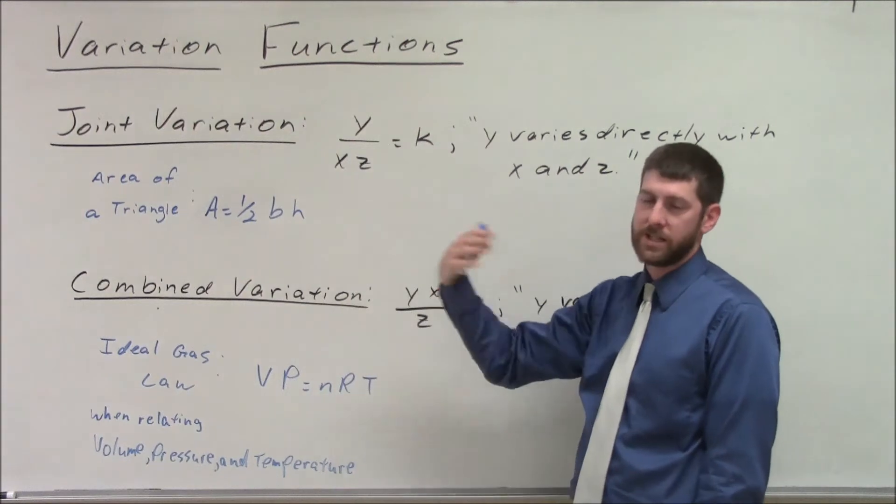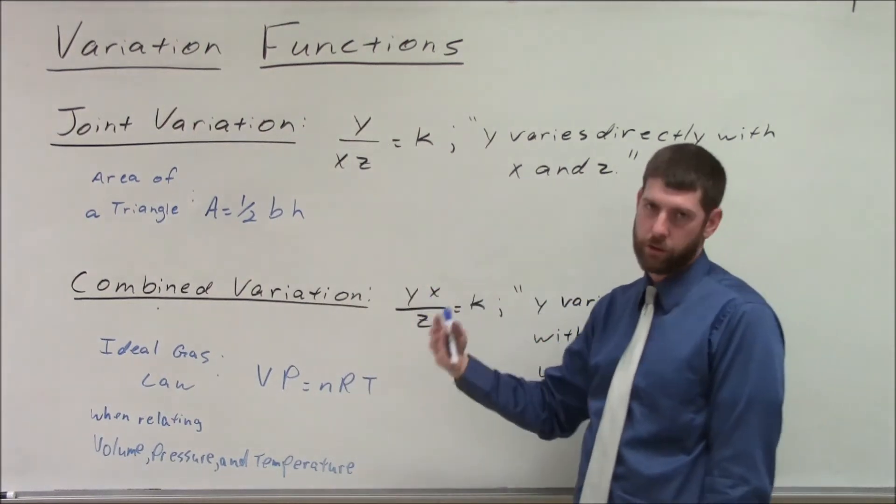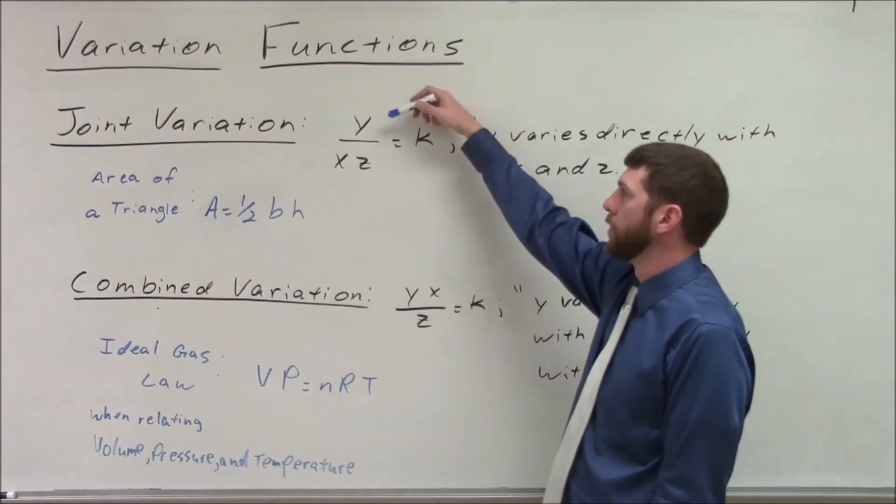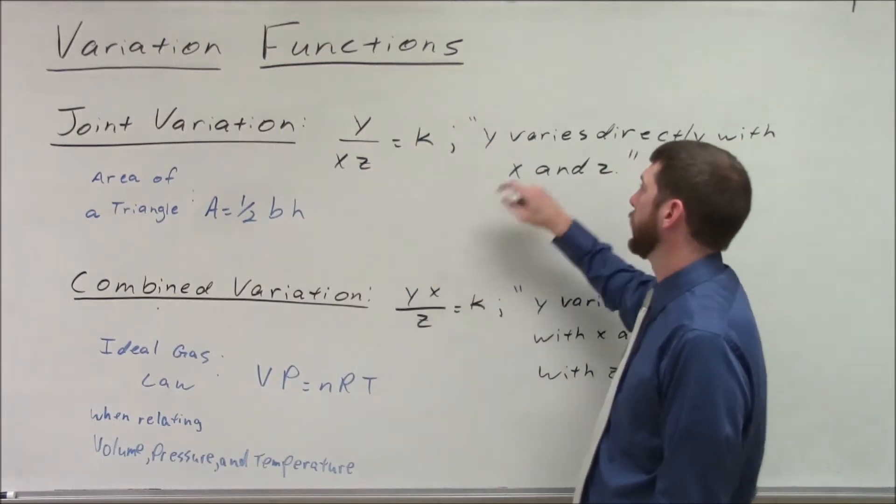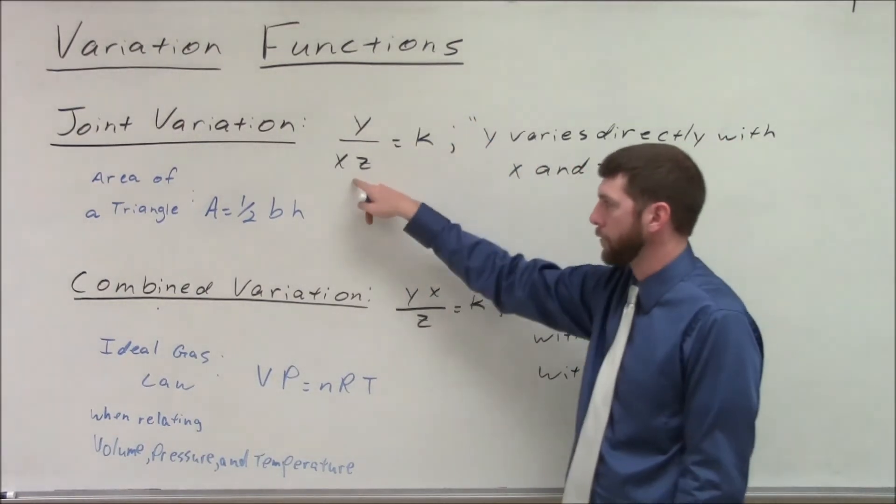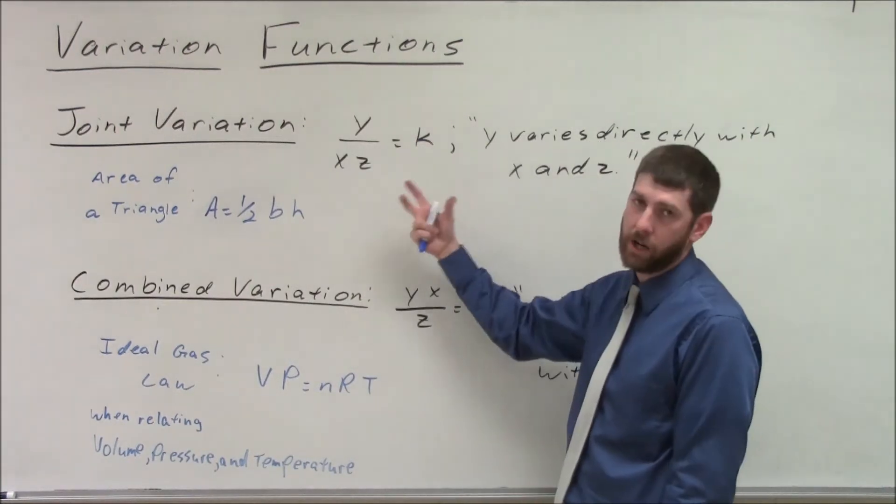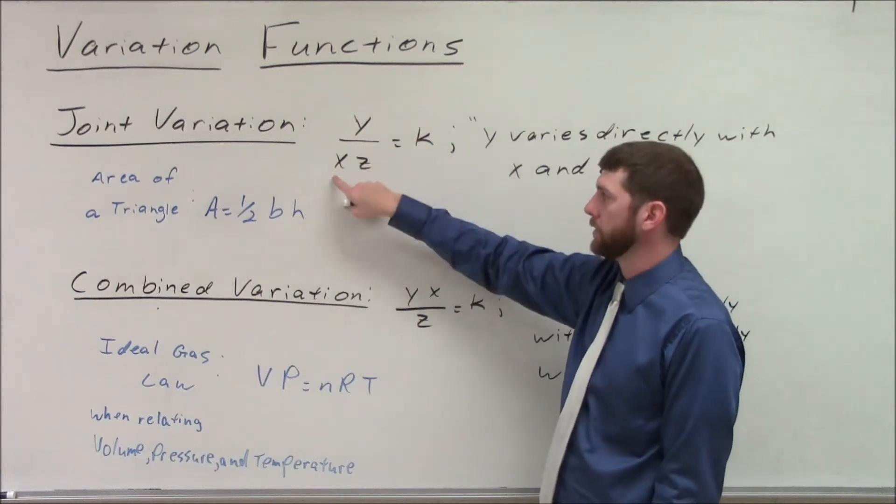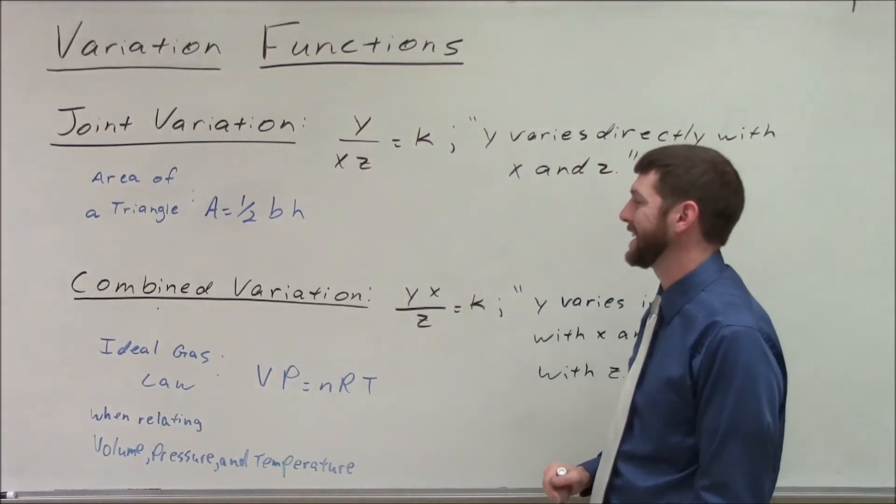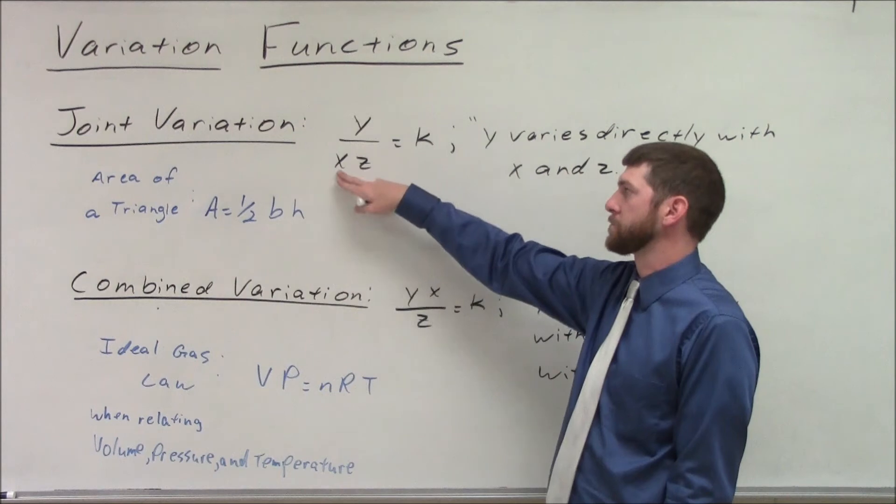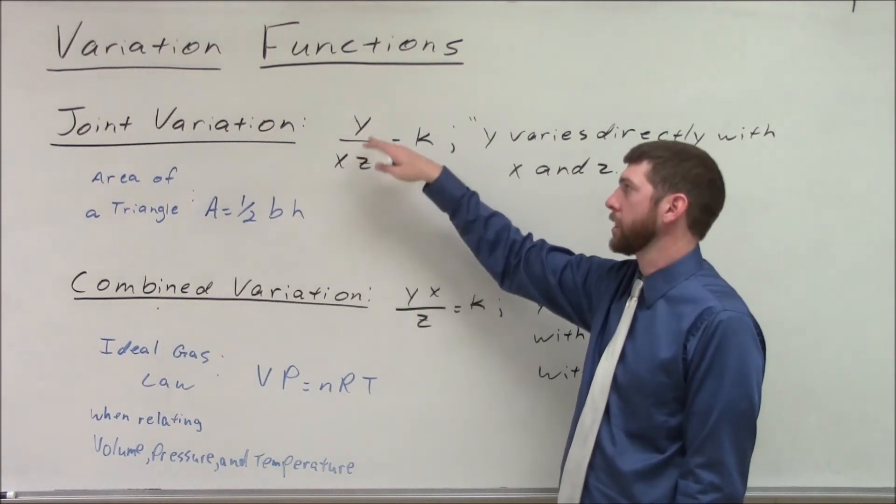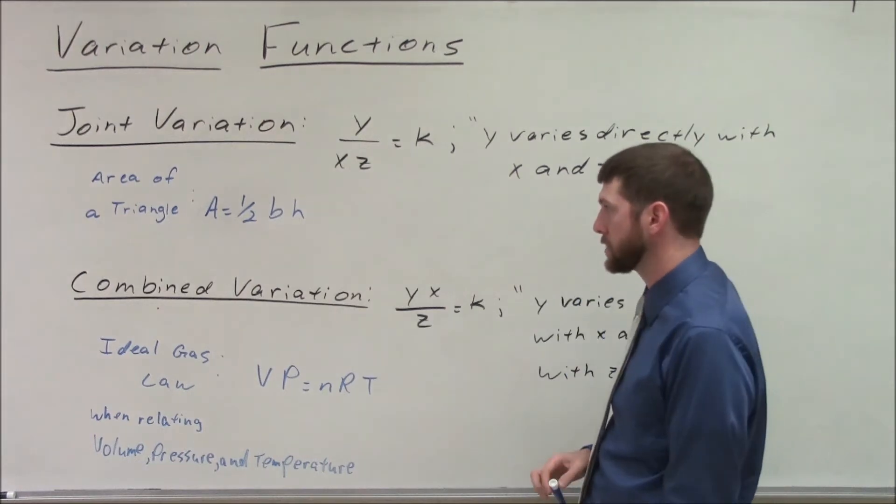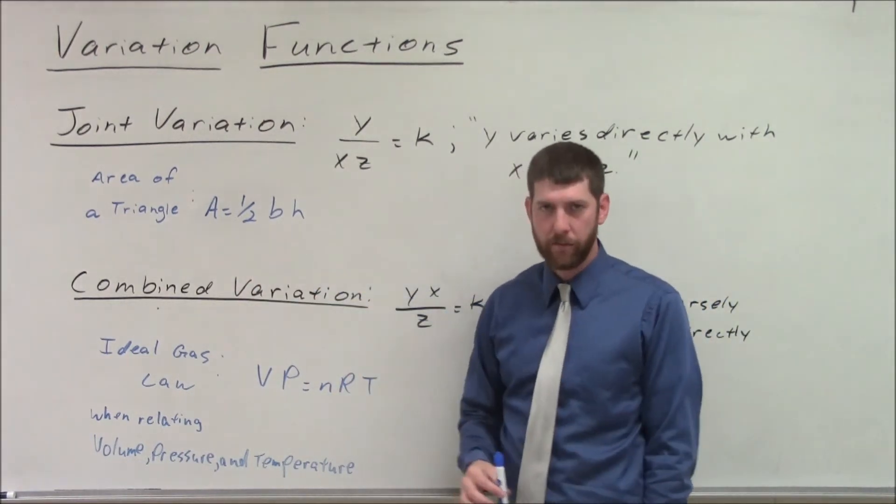So in a joint variation, we're taking y, and we are directly varying it with both x and z. That's the constant ratio there, is y is directly related back to x and z. So if this product x and z were to increase, then y would also have to increase to keep that ratio constant.